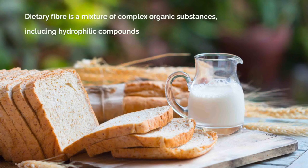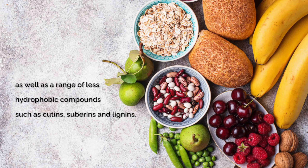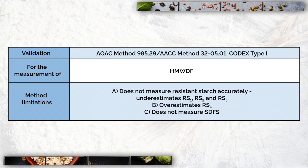Dietary fibre is a mixture of complex organic substances, including hydrophilic compounds such as soluble and insoluble polysaccharides and non-digestible oligosaccharides, as well as a range of less hydrophobic compounds such as cutins, suberins and lignans. In this video, we describe the Prosky Method for the measurement of total dietary fibre.